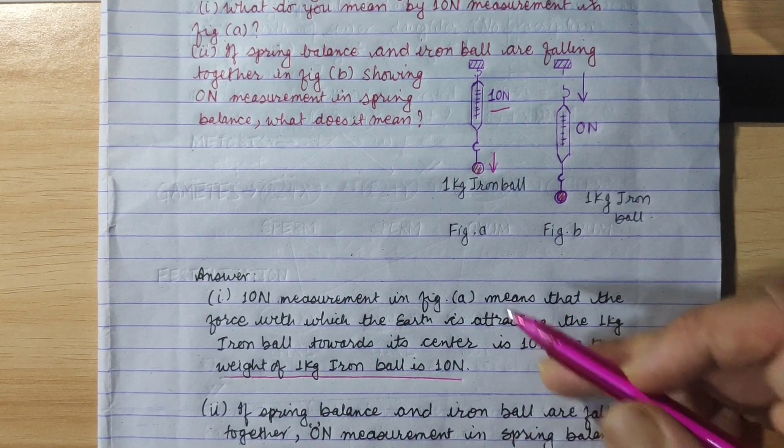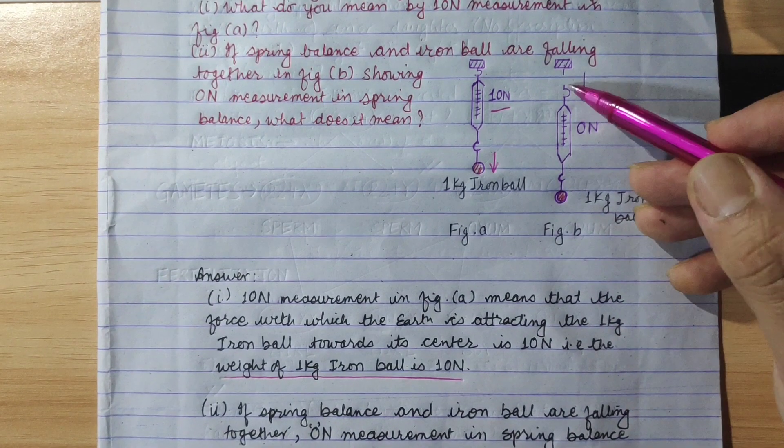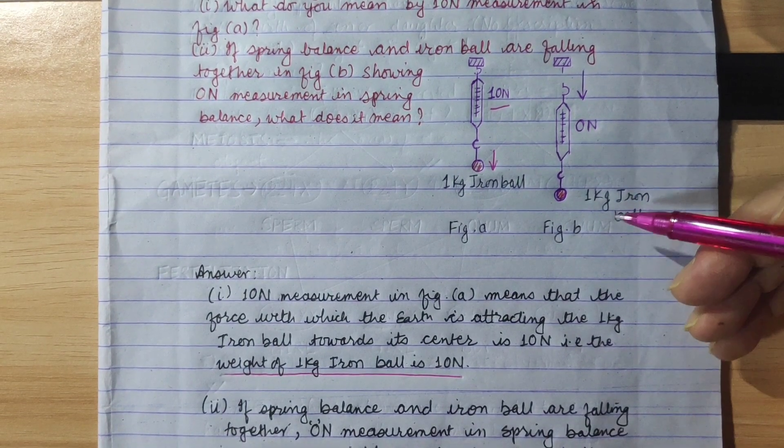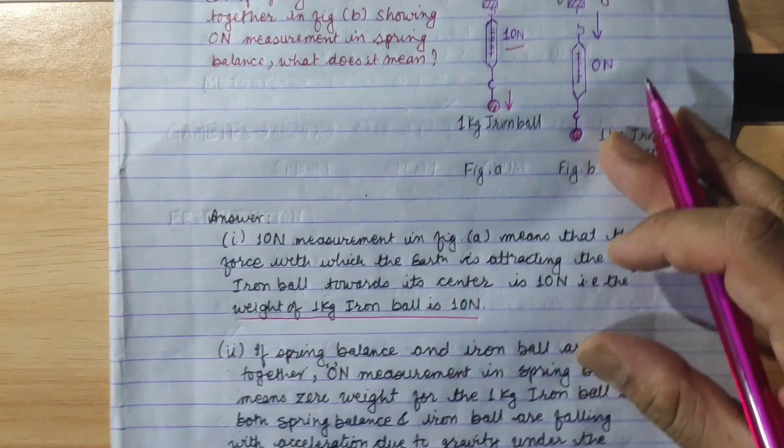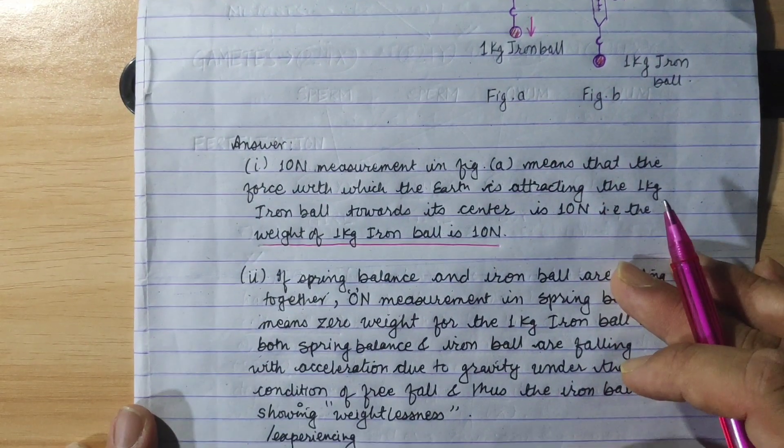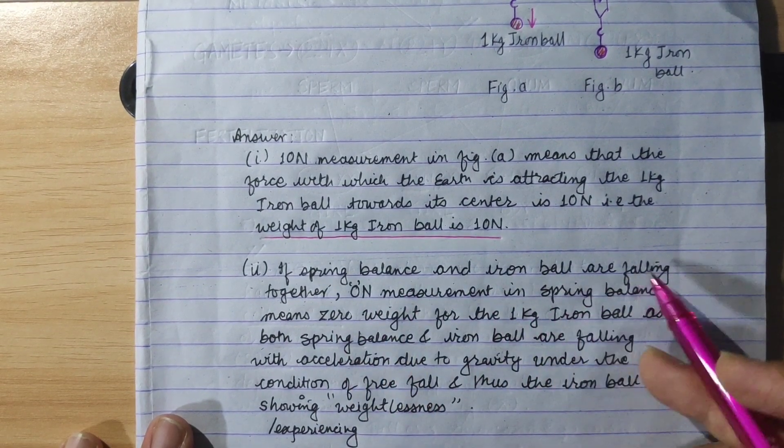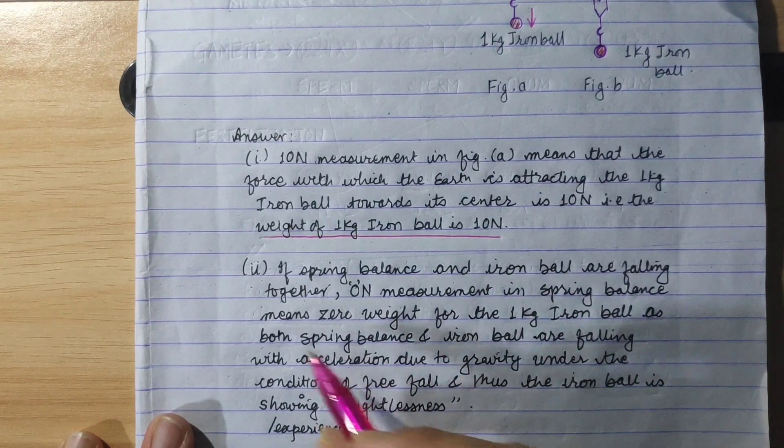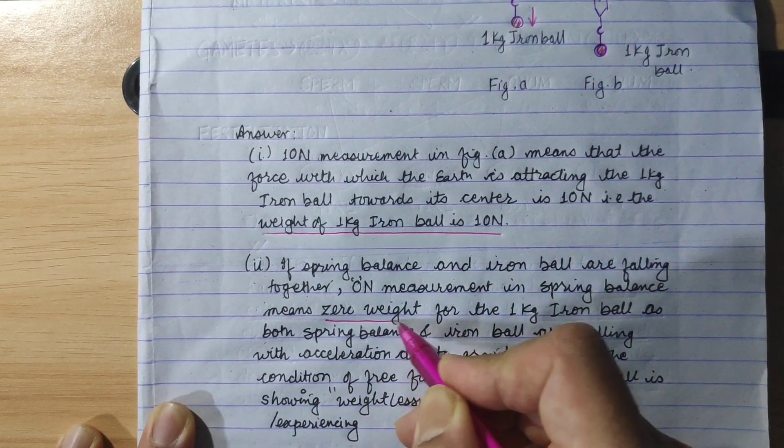Now we will go to the second figure, figure B. If spring balance and iron ball are falling together, 0 Newton measurement in spring balance means 0 weight for the 1 kg iron ball.